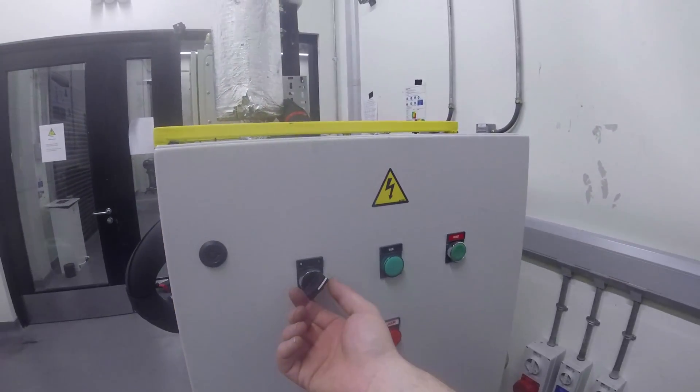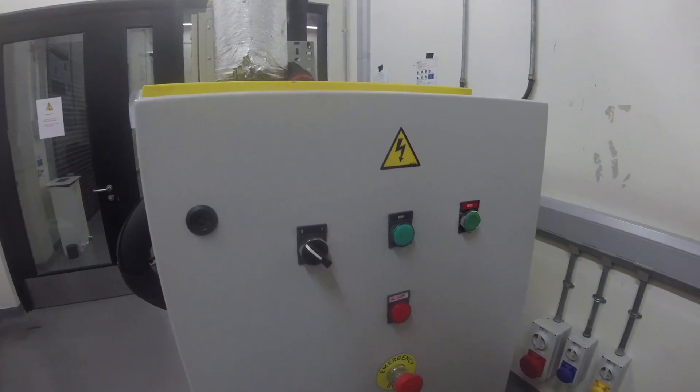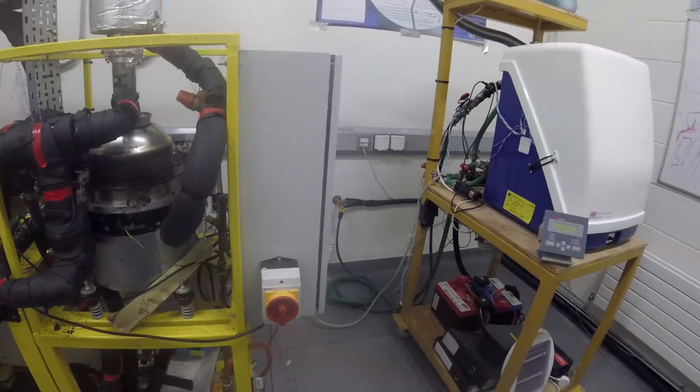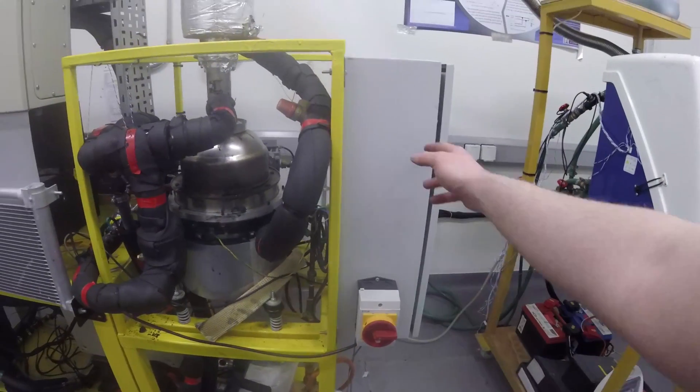To shut down the engine, you simply turn it to the off position. A good rule of thumb is always to press the emergency inhibit as well. If you're definitely finished with the engine for the session, it doesn't hurt to turn off the actual supply to the control box.